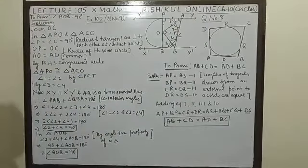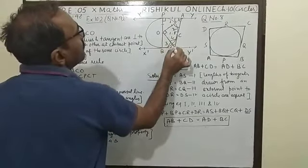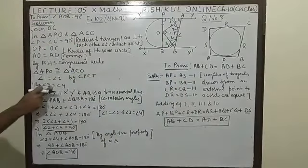Similarly, in triangle BQO and BCO, angle 3 is equal to 4. Clear?